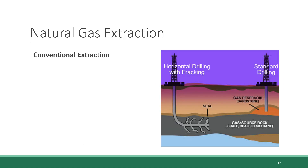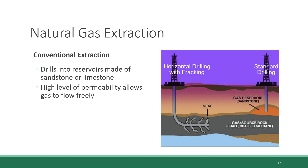There are a couple of approaches for extracting natural gas out of the earth. The conventional extraction method, shown in this diagram as standard drilling, involves drilling down through the gas cap and into reservoirs made of sandstone or limestone. Sandstone and limestone have high permeability — the material is loosely put together, crumbles relatively easily — and that means the natural gas trapped within the pores can freely flow through the material and be pumped out.